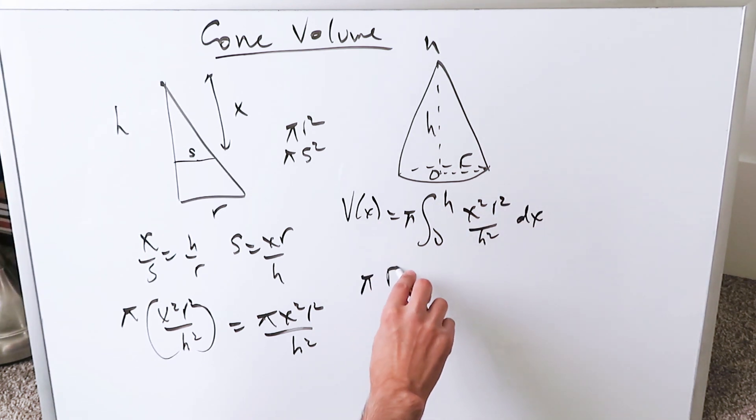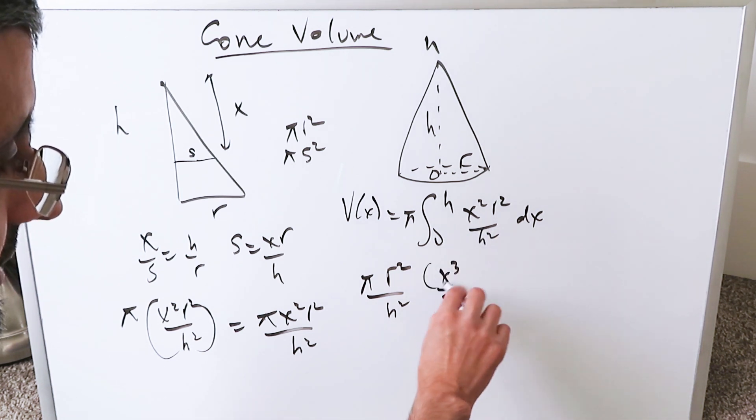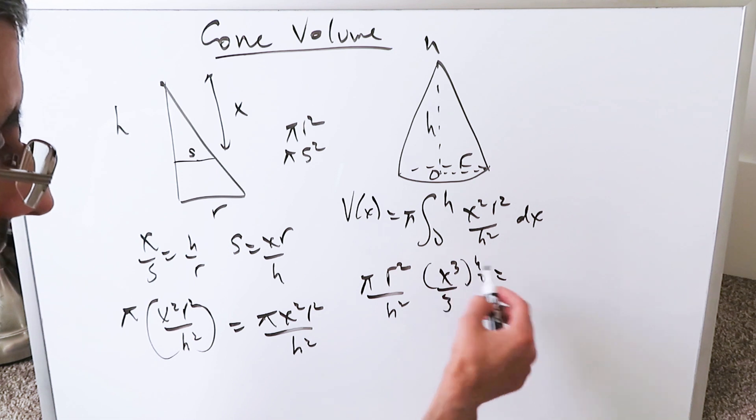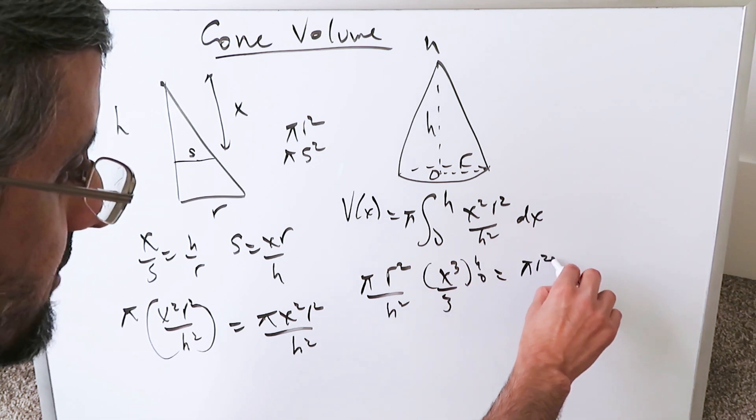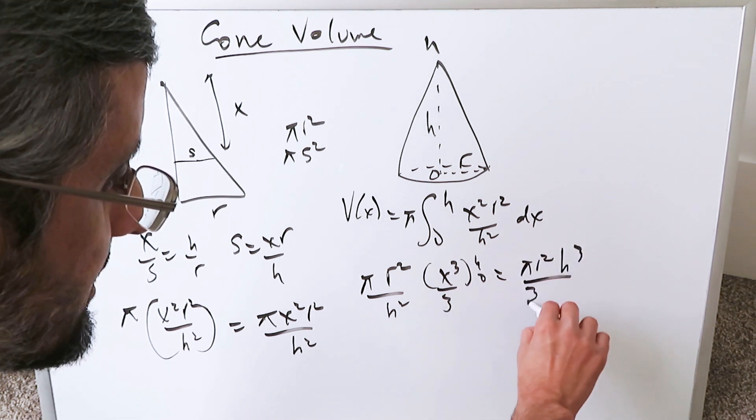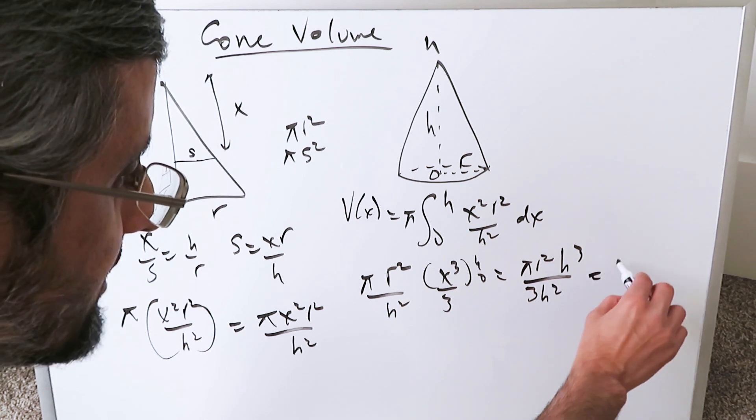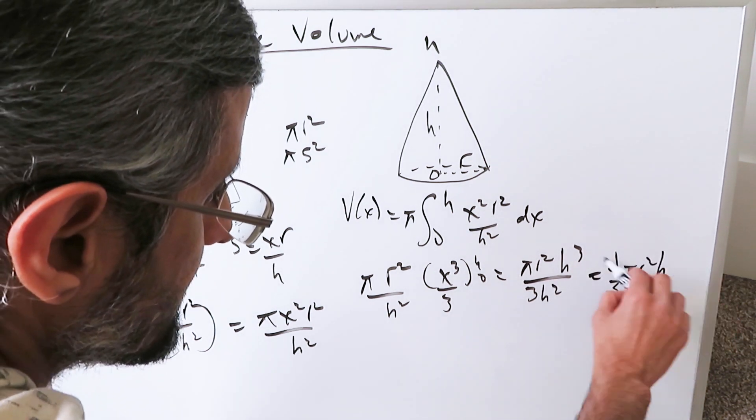You have πr²/h² pushed outside. The antiderivative of x² would be x³/3, evaluated from h to 0. Plug the h in. πr²h³/3h². Simplify this, and you'll have 1/3 πr²h.